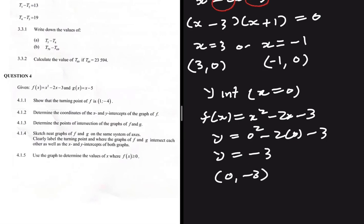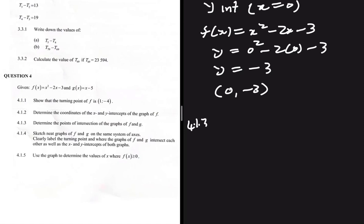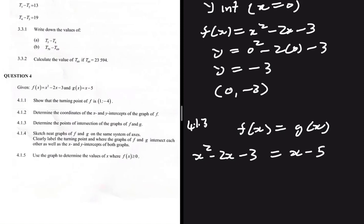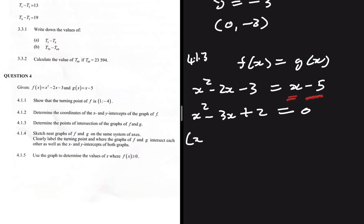Now we can move to 4.1.3: determine the points of intersection of the graphs of f and g. To find the points of intersection, we let f(x) equal g(x). f(x) is x squared minus 2x minus 3, and this equals g(x) which is x minus 5. Taking x and minus 5 to the left-hand side, we get x squared minus 3x plus 2 equals 0. We factorize by opening two brackets.